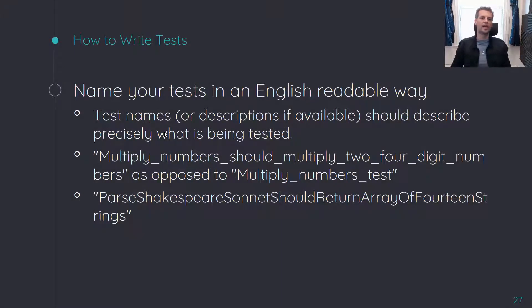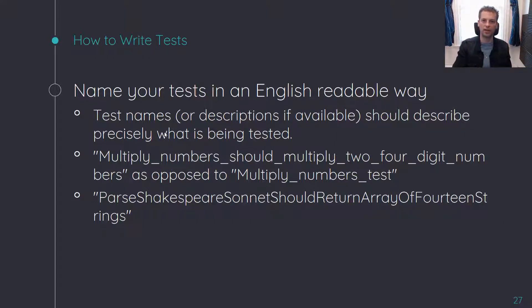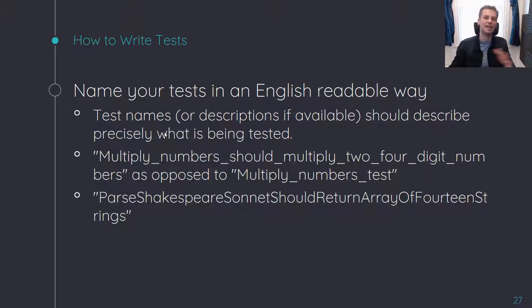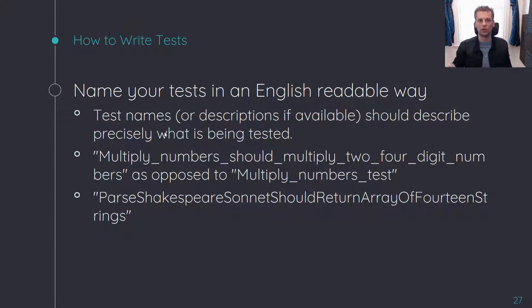Name your tests in an English-readable way. A really common approach is to just name the test after the method or class you are testing. Always try to write your tests in a way that describes the exact behavior being tested. For example: 'multiply numbers should multiply two four-digit numbers' as opposed to 'multiply numbers test.' Or: 'parse Shakespeare's sonnet should return an array of 14 strings.' It is very explicit about what it is — and yes, this name is very long. There's a balance to be struck; names shouldn't be so long they don't fit in your test window. But generally more descriptive is going to be better. Remember, your tests are also serving as your documentation, so you want a fair degree of descriptiveness to properly convey your intent to other developers.